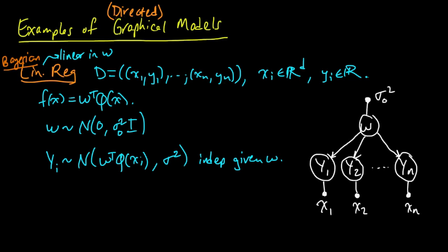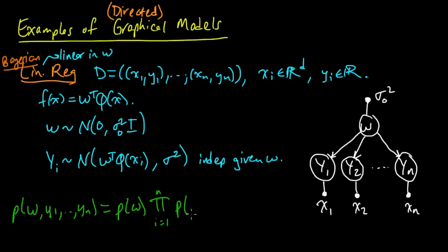This is a graphical model for this setup because we can factor the distribution. The joint distribution on w and all the y's — y1 up to yn — factors as the probability of w times the product over i of P(y_i | w). That's exactly the form the joint distribution needs to factor into in order to respect this graph: w, then y1 depends on w, y2 depends on w, and so on up to yn.